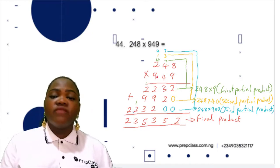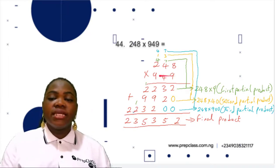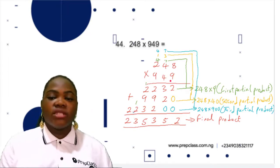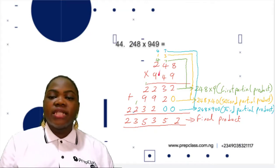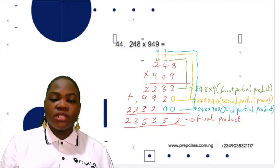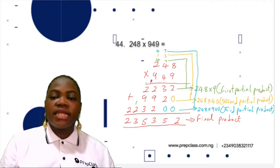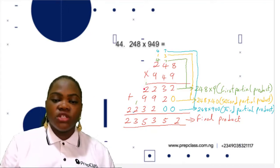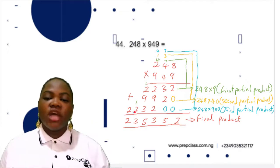Now multiply 248 by 900, the place value of 9 in 949 is 100. We write 0, 0 here. 9 times 8 is 72, write 2 carry 7. 9 times 4 is 36, 36 plus 7 is 43, write 3 carry 4. 9 times 2 is 18, 18 plus 4 is 22. The third partial product is 223,200.